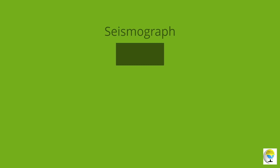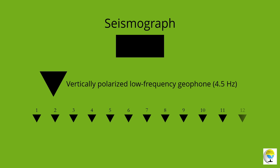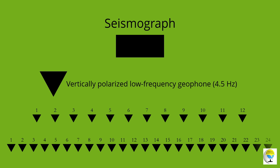MASW data are typically acquired with an engineering seismograph and low-frequency, vertically polarized geophones arranged at regularly spaced intervals. The number of geophones and geophone spacing control the investigation depth and resolution of the data.